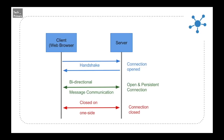When one of the sides decides to close the connection, the connection gets terminated permanently from both ends. Unlike HTTP where a connection is created, a response is received, and the connection is closed — here the connection is created and kept open, and communications happen over the same connection. Once the client decides it is done with updates and doesn't want to receive anything more from the server, the connection gets closed.